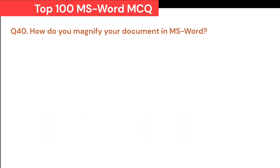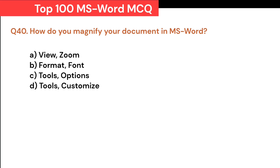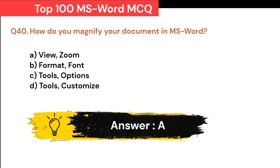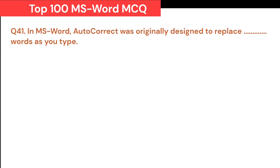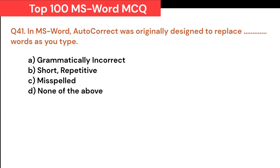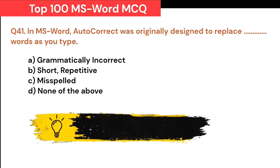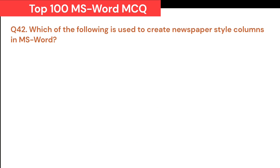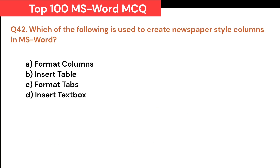How do you magnify your document in MS Word? A. View Zoom. B. Format Font. C. Tools Options. D. Tools Customize. Correct answer is A. View Zoom. In MS Word, AutoCorrect was originally designed to replace Dash words as you type: A. Grammatically incorrect. B. Short repetitive. C. Misspelled. D. None of the above. Correct answer is C. Misspelled. Which of the following is used to create newspaper-style columns in MS Word? A. Format Columns. B. Insert Table. C. Format Tabs. D. Insert Text Box. Correct answer is A. Format Columns.